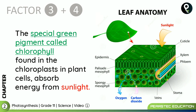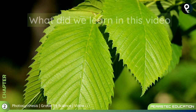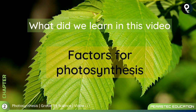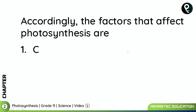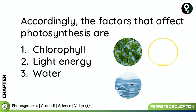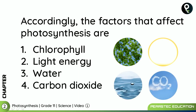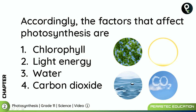So factors one through four are learnt. In this video, the factors for photosynthesis were clearly explained — how chlorophyll traps sunlight and enables food production, or sugar production, in a leaf using water and carbon dioxide. The factors that affect photosynthesis are chlorophyll, light energy, water, and carbon dioxide. Let's meet in another session and I hope you learned something interesting today. Bye bye and take care.